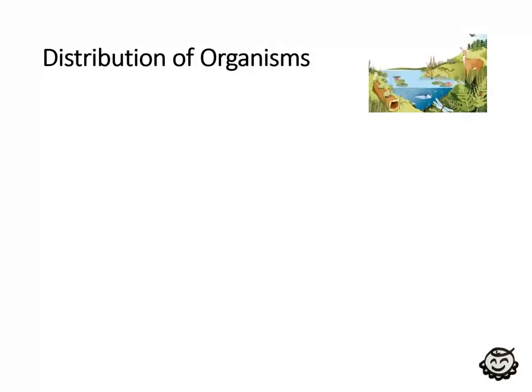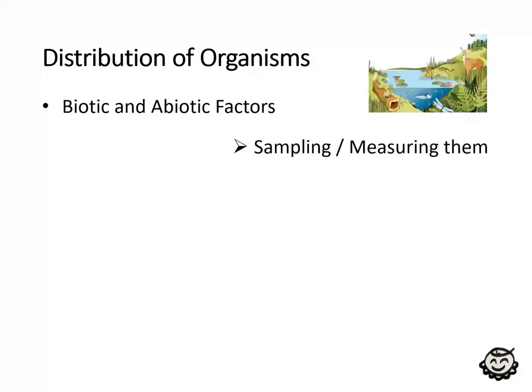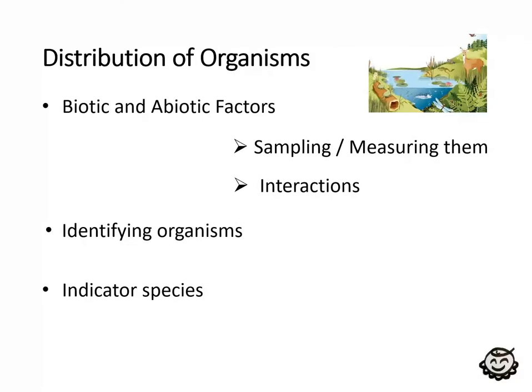In this second key area, I've divided it into three parts. First part: biotic and abiotic factors — we'll look at what these are, define them, and we're going to look at sampling and measuring them. We'll also look at interactions, specifically biotic factors, and we're going to look at identifying organisms and indicator species. This is an outline of what Key Area 2 involves.